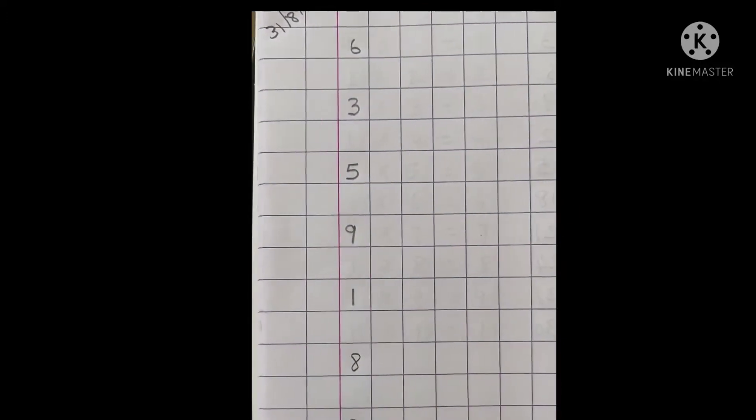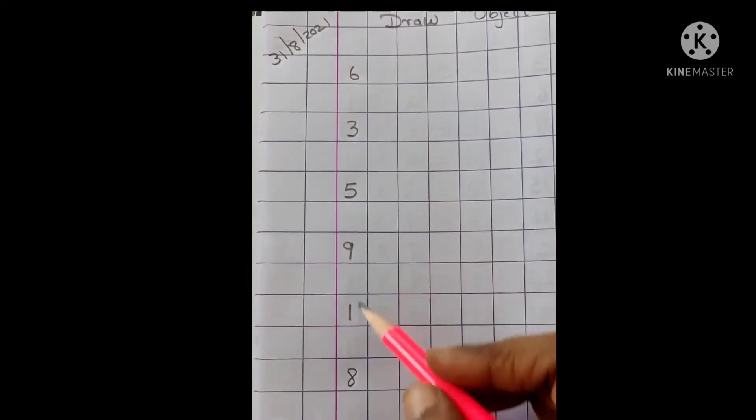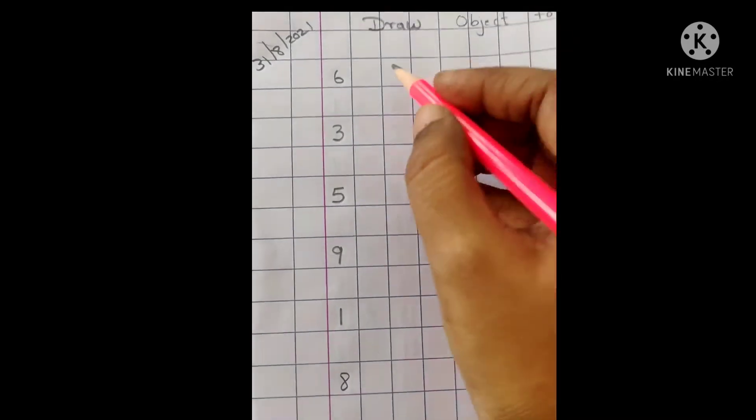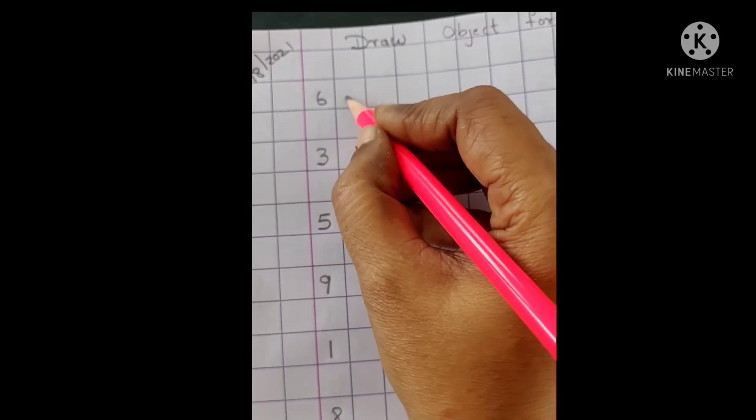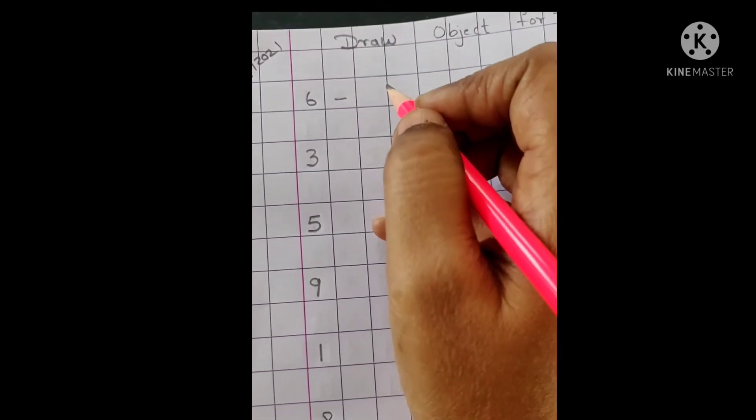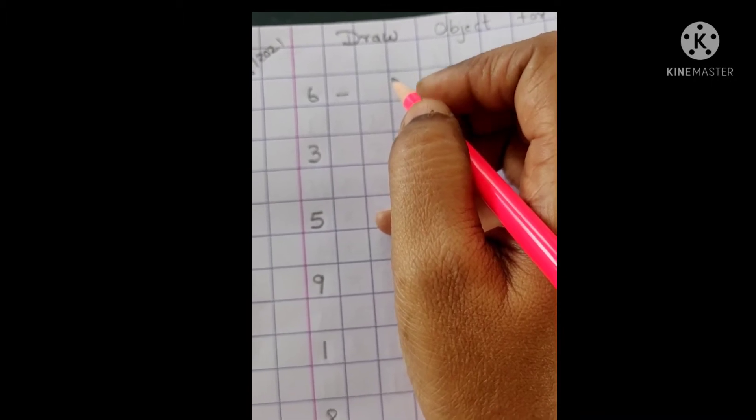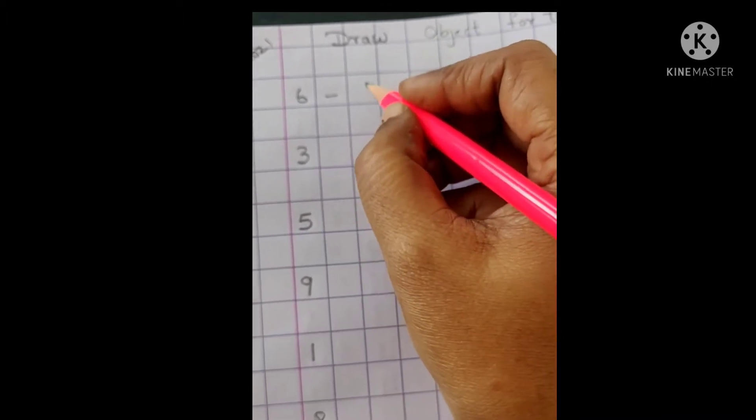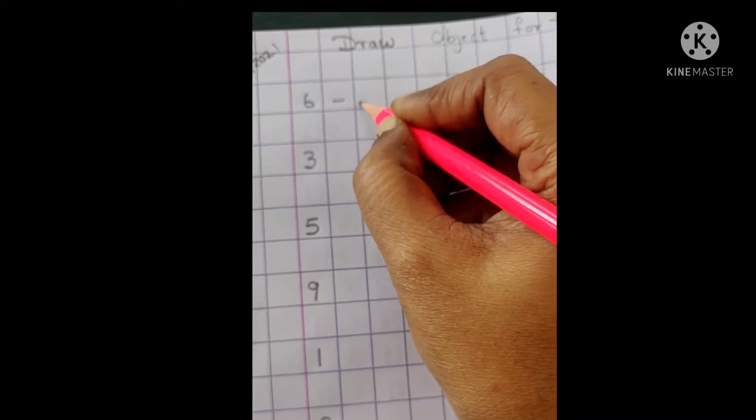Now, here I have written the number. You can write any number which you want. Okay, I have written 6. So put your one small dash 6. So what we will draw? We will draw 6 stars. Okay, we will draw 6 stars.